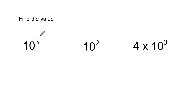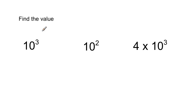But what if you have to go the other way? If you have to do 10 to the third power and find the value of that — and 10 to the second power — and then something like 4 times 10 to the third power? So 10 to the third power is 10 times 10 times 10. You can do a little mental math: 10 times 10 is 100, and then 100 times 10 is 1,000. So 10 to the third power is 1,000.